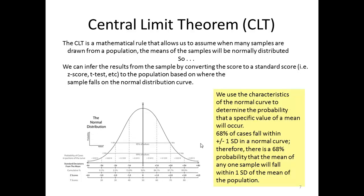We use the characteristics of a normal curve to determine the probability that a specific value of a mean will occur. 68% of cases fall within one standard deviation of a normal curve. Therefore, there's a 68% probability that the mean of any one sample will fall within one standard deviation of the mean of the population.